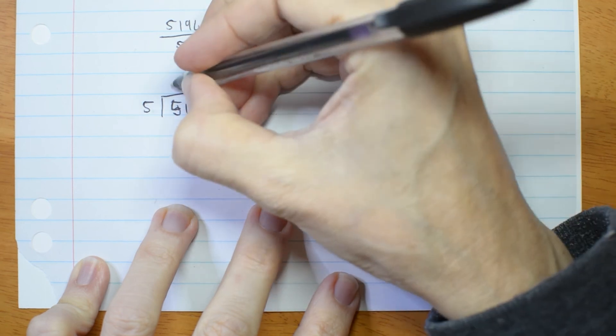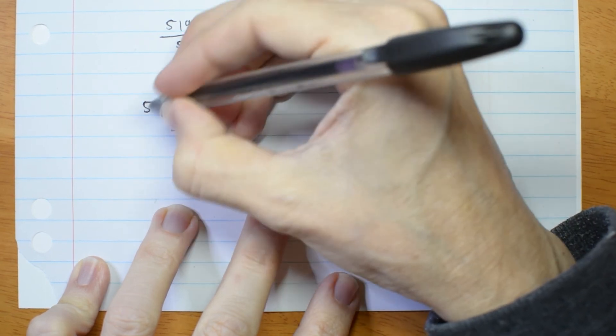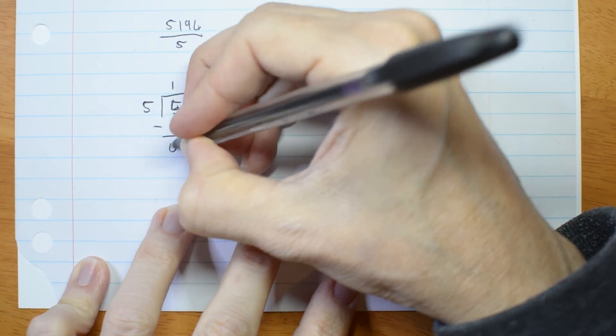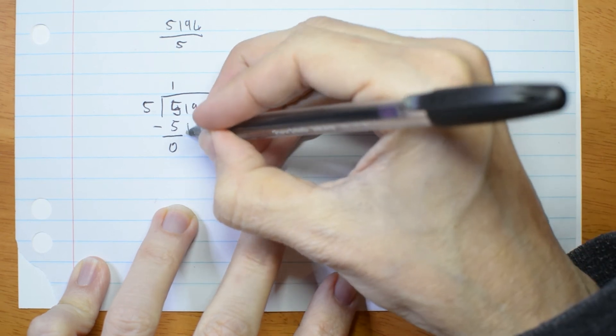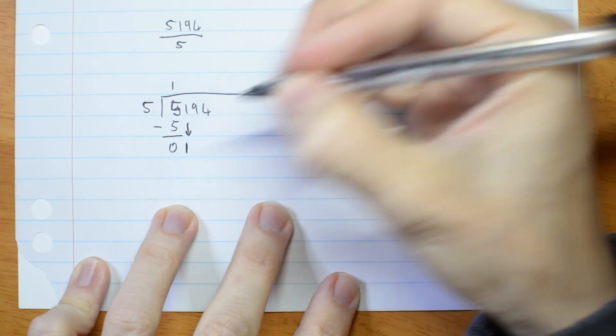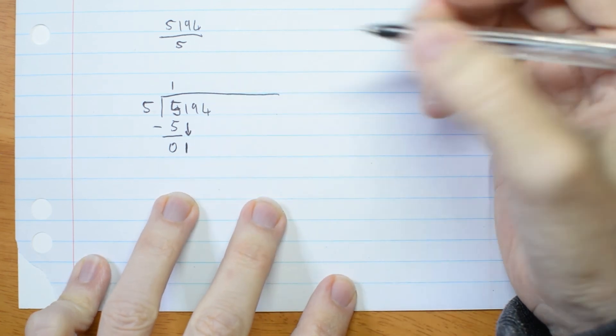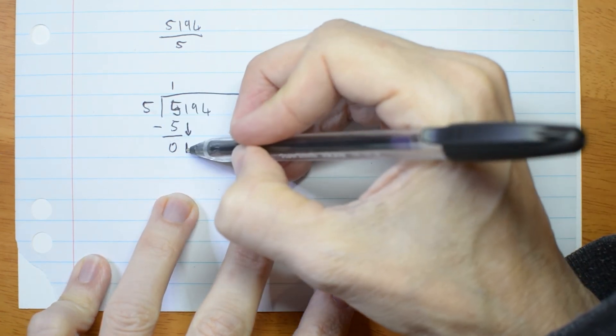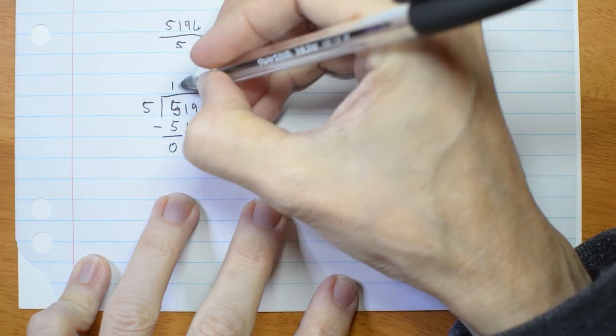5 goes into 5 once. 1 times 5 is 5. Subtract 0. Bring down the next digit. And you don't have to draw the arrow if you don't want to. I'm just making sure you can see what's going on. 5 goes into 1. Well, it doesn't. 0.